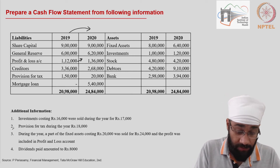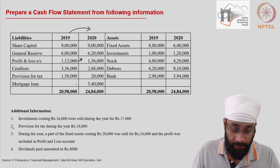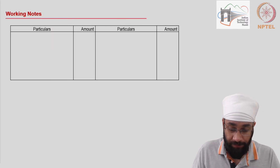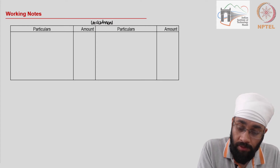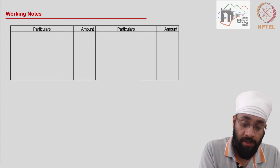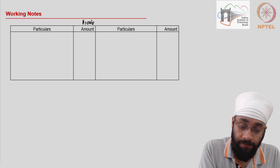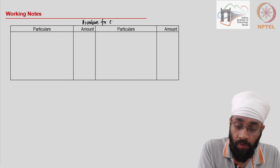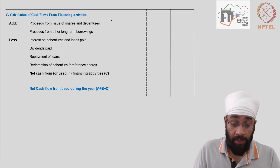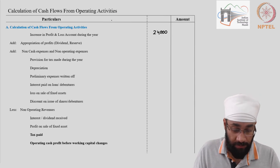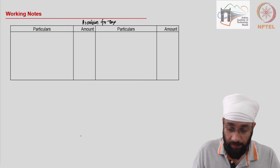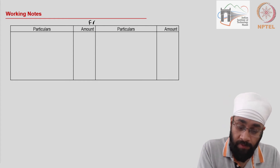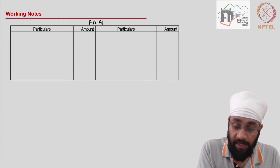So I will prepare an investment account and a provision for tax account. And I think there is something about the fixed assets account as well, so I'll prepare a fixed asset account.